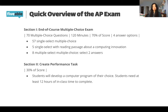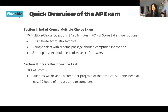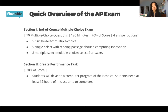Section two is the Create Performance Task, which has been part of the AP exam for a while. It's 30% of your score and involves developing a computer program in class. Your teacher must give you at least 12 hours — roughly two weeks — but you can work on it longer as long as you submit before the College Board due date. Finish it early so it doesn't interfere with exam prep. The guidelines and rubric are pretty clear, and more videos about this section are coming.